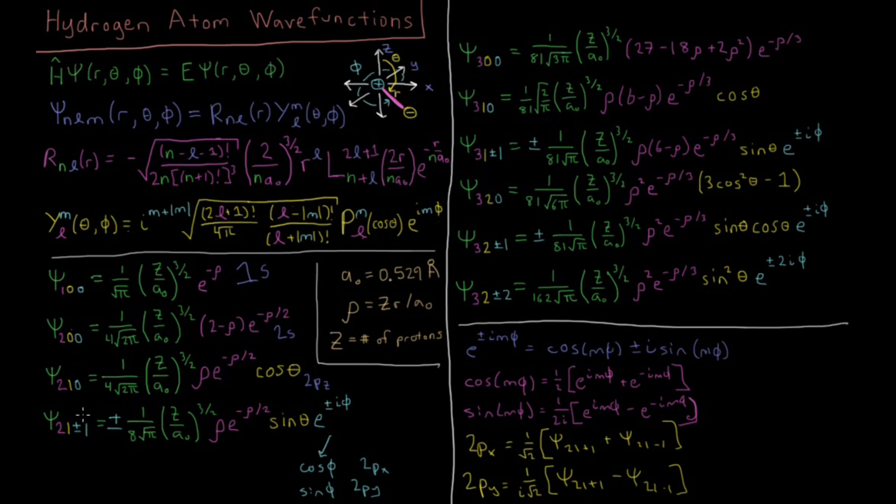Those are all the n equals 2 states. At n equals 3, we have what's going to be the 3s orbital with a quadratic polynomial in rho, which rho is just Zr over the Bohr radius. Z is the number of protons in the nucleus. We have this in here because these are valid wave functions for any atom or ion which only has one electron. So this would be hydrogen or helium plus, lithium 2 plus, beryllium 3 plus, etc. The Bohr radius is 0.529 angstroms.